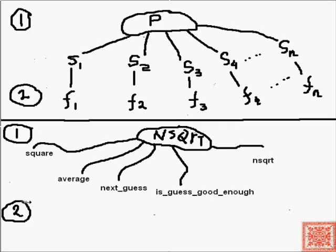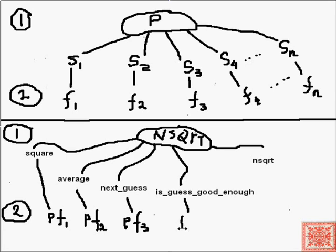And then the second step is actually mapping each sub-task into a Python function. So let's say square into Python function number one, average into Python function number two, next_guess into Python function number three, is_guess_good_enough into the fourth function, and finally nsqrt into the fifth function.